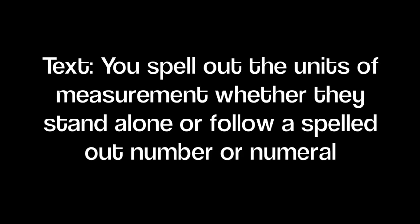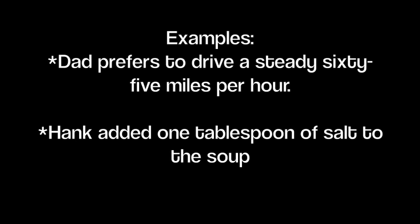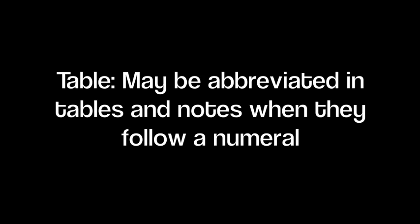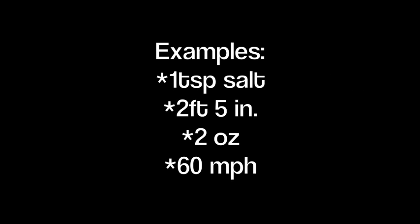In text, you spell out the units of measurement, whether they stand alone or follow a spelled-out numeral. Examples: Gad prefers to drive a steady 65 miles per hour — notice how miles per hour is spelled out and not abbreviated MPH. Hank added one tablespoon of salt to the soup — notice that tablespoon is spelled out and not abbreviated TBS. You may abbreviate in tables and notes when they follow a numeral. Examples in notes and tables: one tablespoon salt, two feet, five inches, two ounces, and 60 miles per hour — notice how all of these are abbreviations.